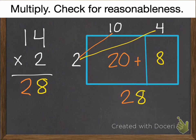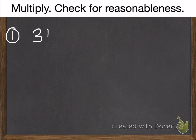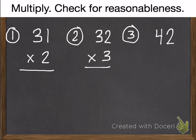Okay, now you're ready for 3 problems that we'll check in class tomorrow. Number 1 is 31 times 2. Number 2 is 32 times 3. And number 3 is 42 times 2. So you need to multiply those and check each of them to see if they're reasonable. Thank you for listening and have a wonderful night.